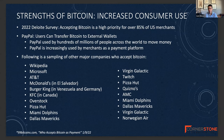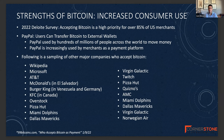Bitcoin is used as a store of value, and also as a means of payment to pay for goods and services, which is being increasingly adopted. A Deloitte 2022 survey said accepting Bitcoin is a high priority for over 85% of its U.S. merchants. PayPal also recently announced that PayPal users can now transfer Bitcoin to external Bitcoin wallets — a big development since PayPal is used by hundreds of millions of people across the world to move money. Below, you can see a sampling of national and international corporations who now accept Bitcoin as a means of payment.